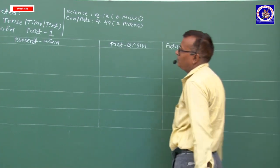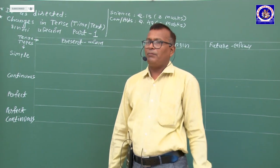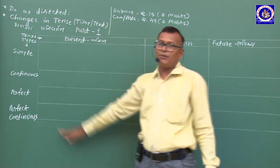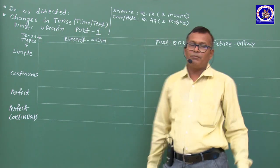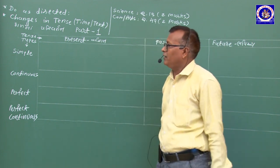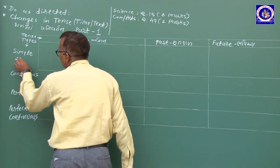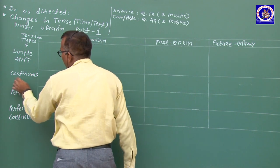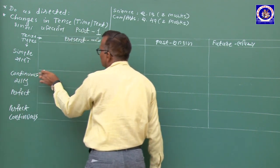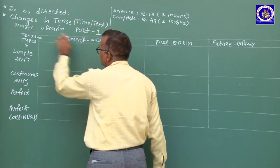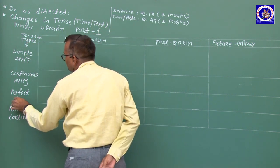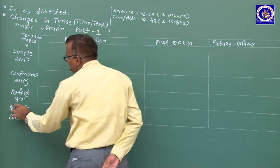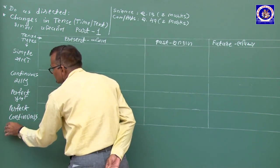કાળના ત્રણ પ્રકાર છે: વર્તમાન, ભૂતકાળ, ભવિષ્ય — Present, Past અને Future. દરેકના ચાર-ચાર પ્રકાર પડે છે: Simple, Perfect, Continuous, Perfect Continuous — એટલે સાધો, પૂર્ણ, ચાલુ, ચાલુ-પૂર્ણ.